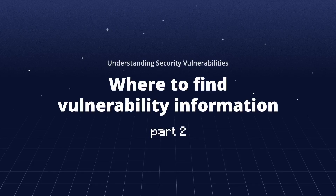Information on security vulnerabilities can be found in many different places. The CVE list maintained by MITRE is a central repository with all vulnerabilities that have a CVE identifier. But there are more places where vulnerability information can be found. In this second part of the course, we will look at some more examples of where you can find information on vulnerabilities.